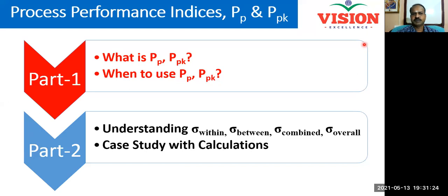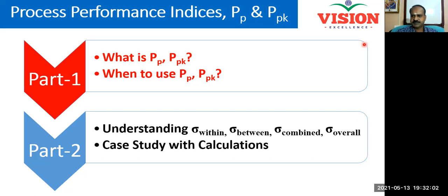PP and PPK are called the process performance indices. They are otherwise called the overall capability indices or the long-term capability indices. I am going to explain PP and PPK in two videos and this is part one. Here I will explain what exactly PP and PPK are, how they are different from CP and CPK, and when should we use PP and PPK versus CP and CPK. After understanding this, the second video will cover the calculations behind PP and PPK as well as CP and CPK.